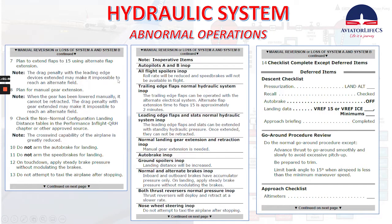The drag penalty with the leading edge devices extended may make it impossible to reach an alternate field. Plan for a manual gear extension. When the gear has been lowered manually it cannot be retracted — the drag penalty with gear extended may make it impossible to reach an alternate field. Check the non-normal configuration landing distance tables. Note: the crosswind capability of the airplane is greatly reduced. Do not arm the auto brake for landing. Do not arm the speed brakes for landing. On touchdown, apply steady brake pressure without modulating the brakes. Do not attempt to taxi the airplane after stopping.